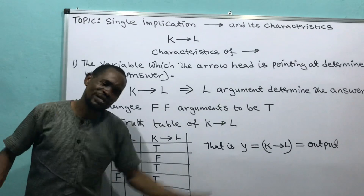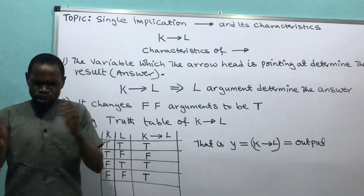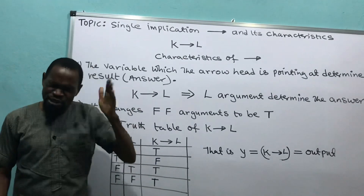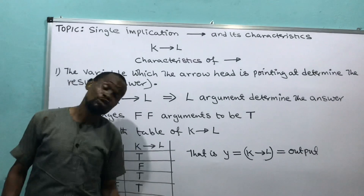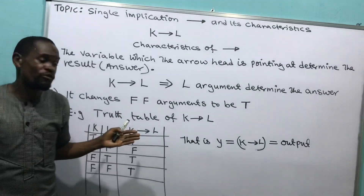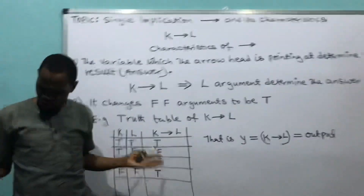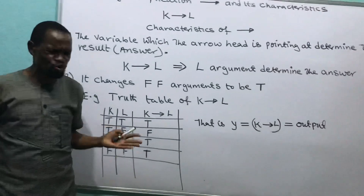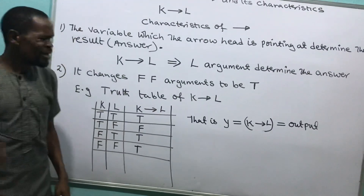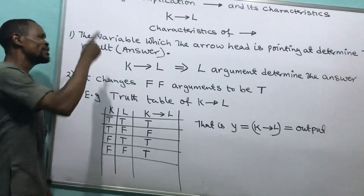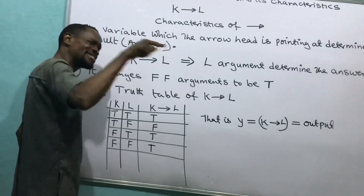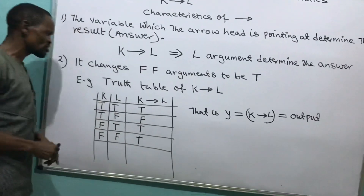If this man says false and this one says false, the single implication will say no — that is the word true. Two of you cannot say false. If two of you say false, it will be true. So the two characteristics are: one — the arrow pointing at determines the results; two — false-false is changed to true.